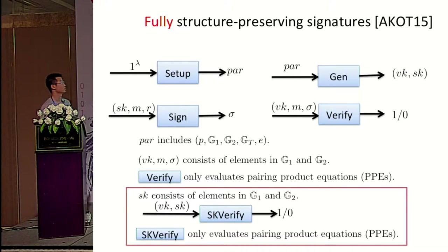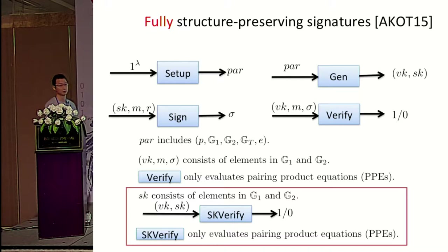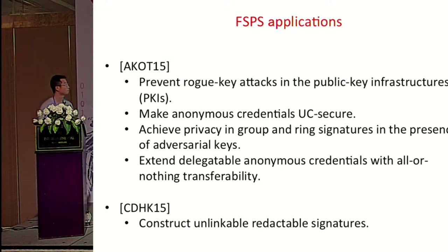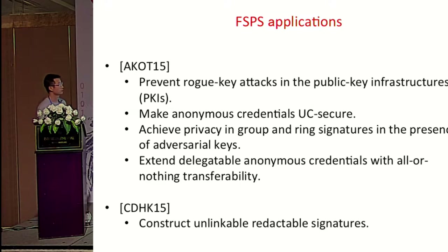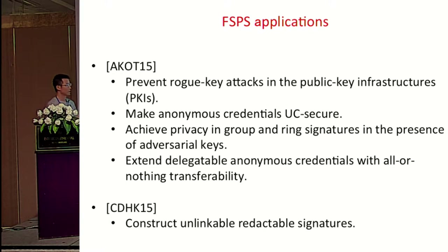Last year, Abe and others proposed Fully Structure-Preserving Signature Schemes, which are the same as standard Structure-Preserving Signature Schemes, except that it's required that the signing key also consists of only group elements. And there exist some PPEs that can check the correctness of the signing keys with respect to the verification keys. Applications include preventing rogue key attacks, making anonymous credentials user-secure, and Caminish and others used Fully Structure-Preserving Signatures to construct unclonable, redactable signatures.